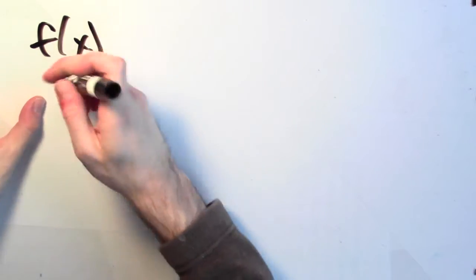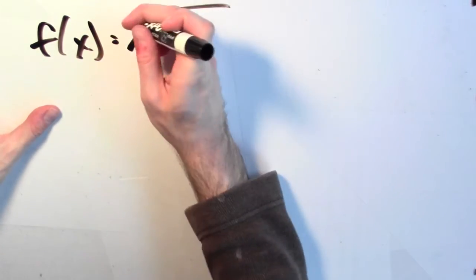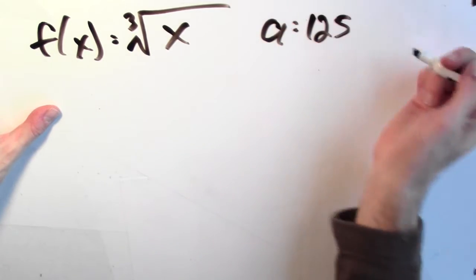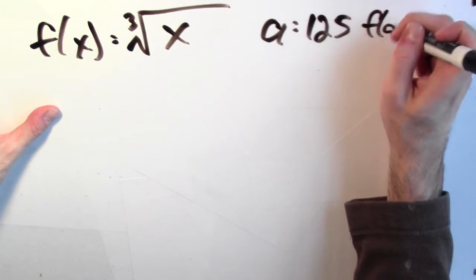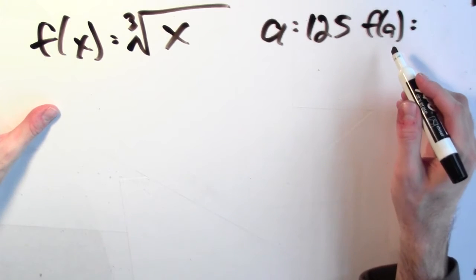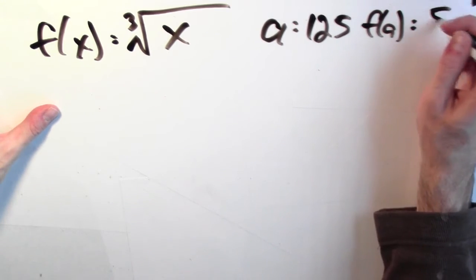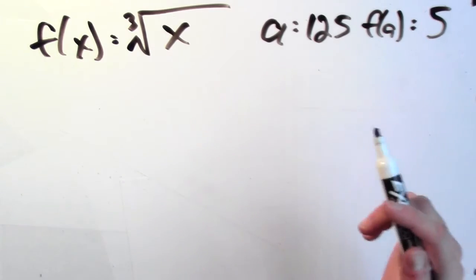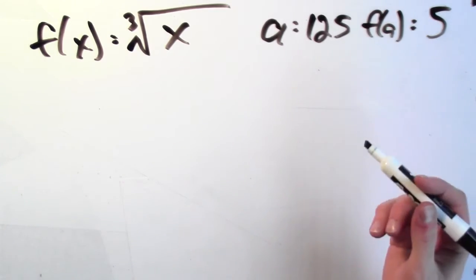Let's look at a function f(x) will be the cube root of x. And let's look at the input 125. And f at 125, what's the cube root of 125? That's 5. Because 5 times 5 times 5, that's 125. So the cube root of 125 is 5.